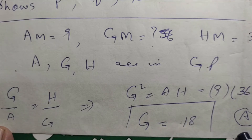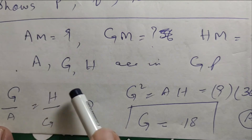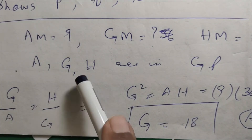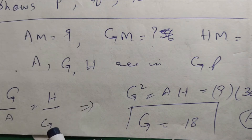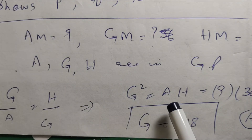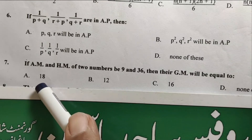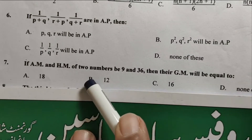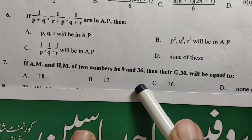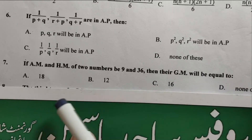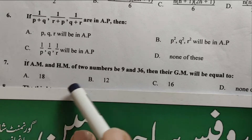Option A is correct. A, G, H are in geometric progression. Since second equals first, or third divided by second, G squared equals H times A. So G equals the square root of nine times thirty-six, which gives G equals eighteen. Option A is correct. If arithmetic mean and harmonic mean of two numbers be nine and thirty-six, their geometric mean equals eighteen.